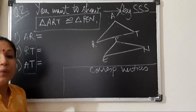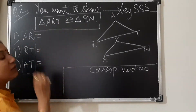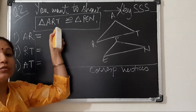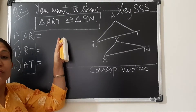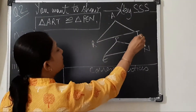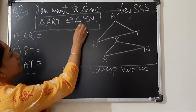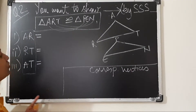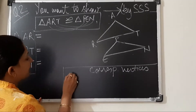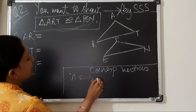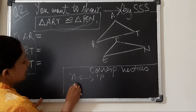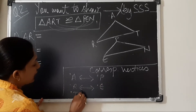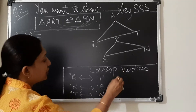How do we match the vertices? We match using the triangles that are given as congruent: ART and PEN. As I have told you before and given you notes, these are always cyclic. So A is matching with P, R is matching with E, and T is matching with N. Vertex A matches vertex P, vertex R matches vertex E, and vertex T matches vertex N.